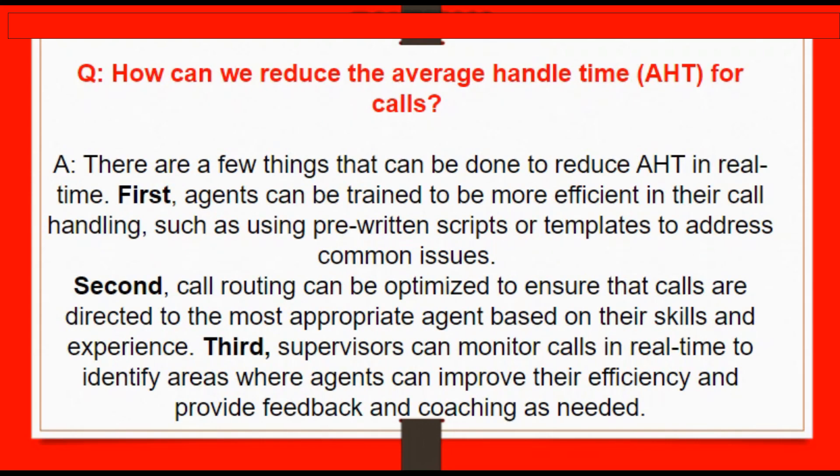The first question is: how can we reduce the average handle time, or AHT, for calls? The answer is there are a few things that can be done to reduce AHT in real time. First, agents can be trained to be more efficient in their call handling, such as using pre-written scripts or templates to address common issues.